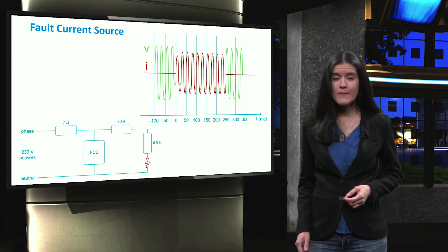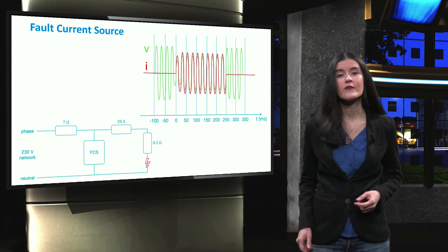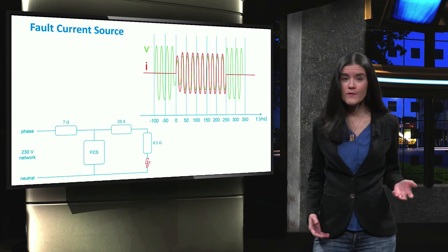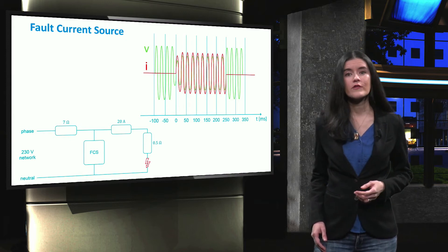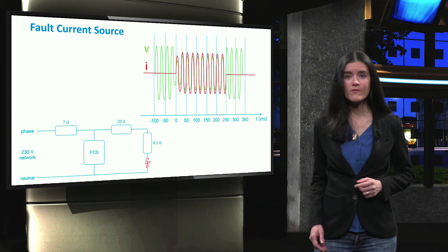Let us now look at an example showing the behavior of a fault current source during the fault. Before the fault, the voltage at the terminal of the fault current source is equal to the nominal voltage value, and its current is zero.